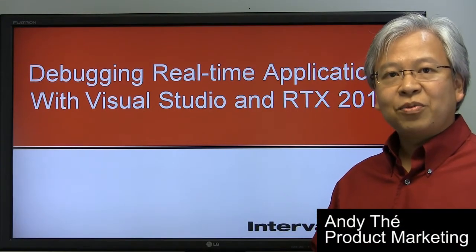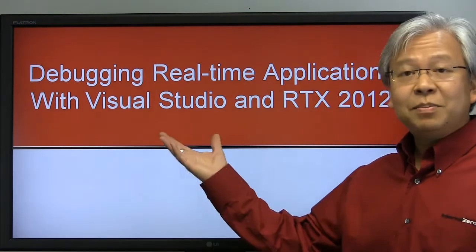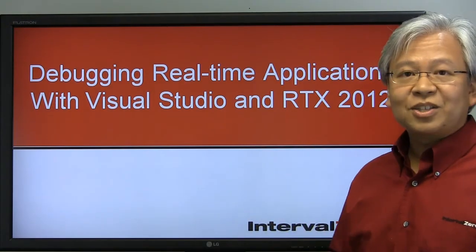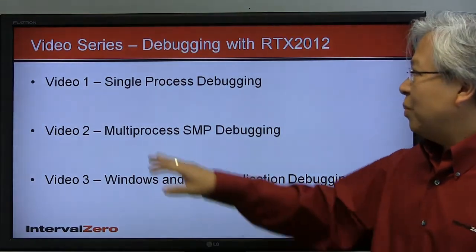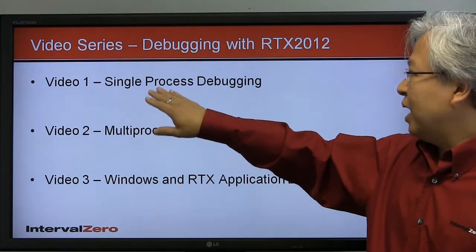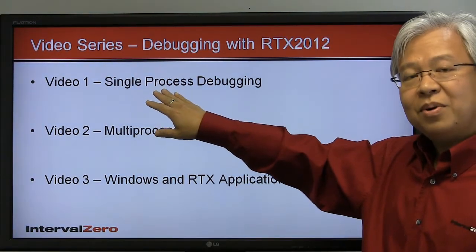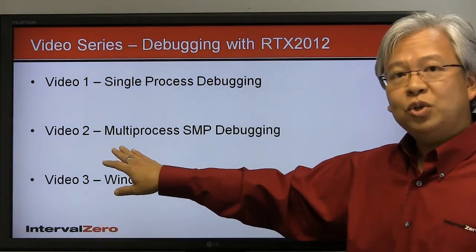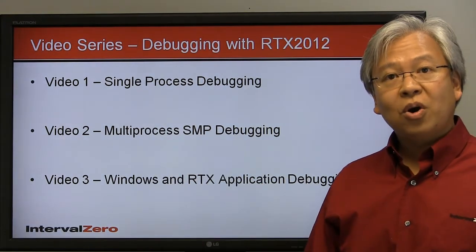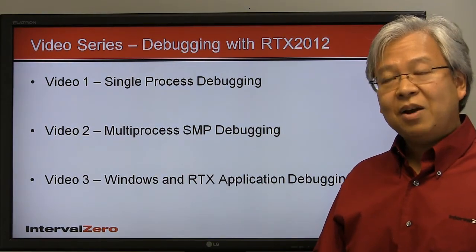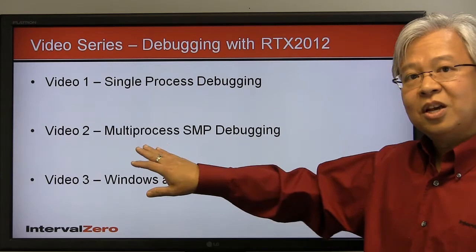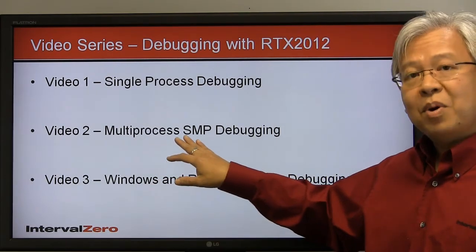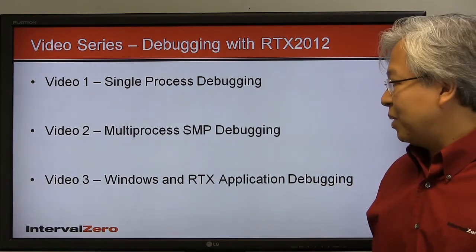Welcome back. Here we are in video three of our three-part series on debugging real-time applications using Visual Studio and RTX 2012. In our first video, we attached to a running real-time process using Visual Studio and debugged that. In video two, we dealt with a multi-core, multi-process environment, attaching to multiple real-time processes using multiple instances of Visual Studio.